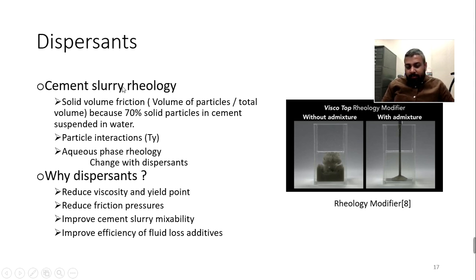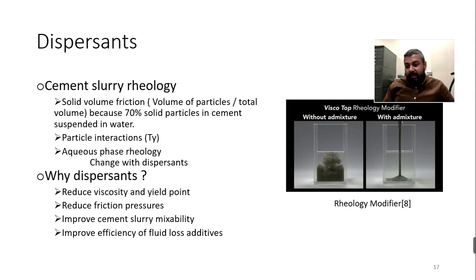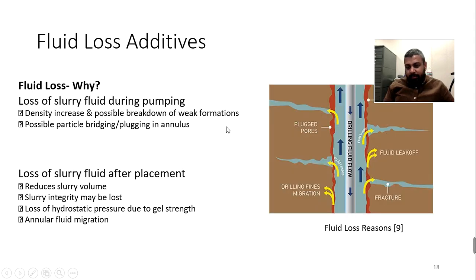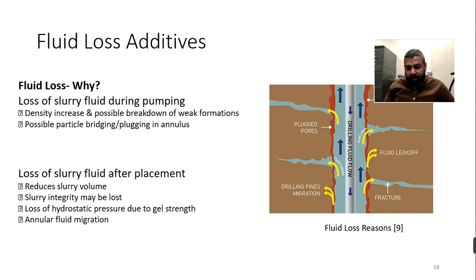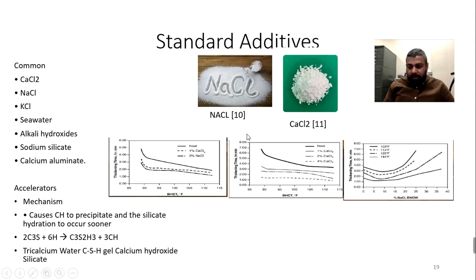For rheology: if viscosity and friction are reduced, you don't need high pump pressure at surface and can move the cement more efficiently. High viscosity means high friction, which requires more pumping pressure — meaning more energy and higher cost. By reducing friction and viscosity, pumping costs are reduced. In the case of loss circulation, cement is lost into formations, causing further problems, so loss circulation materials are used to seal those zones.